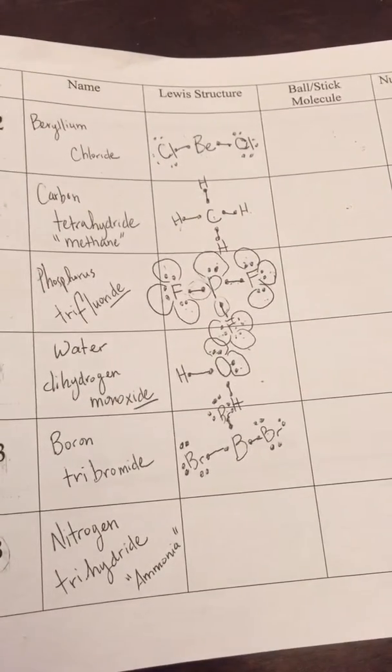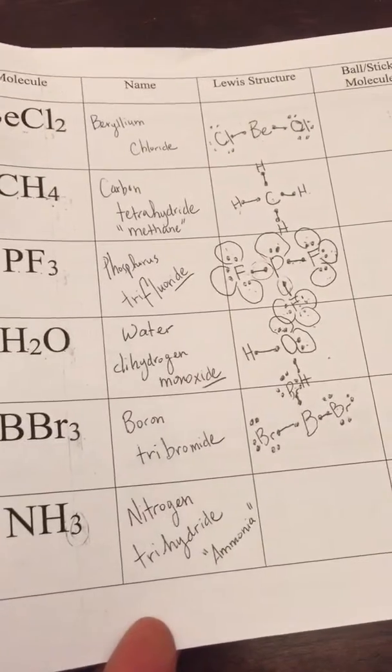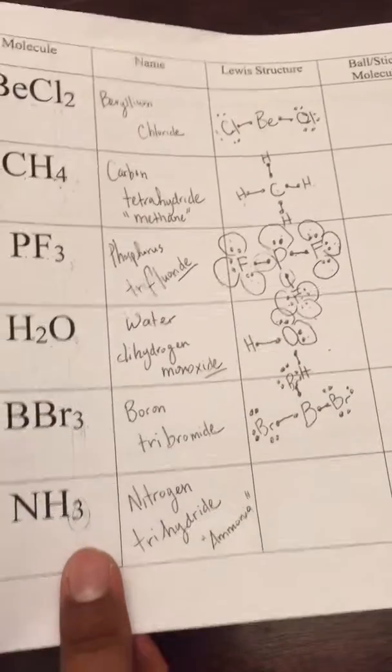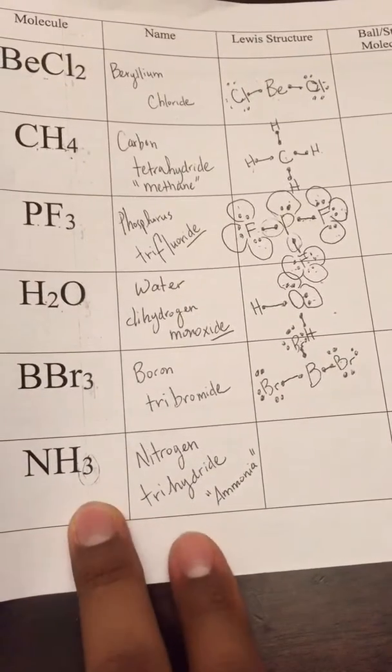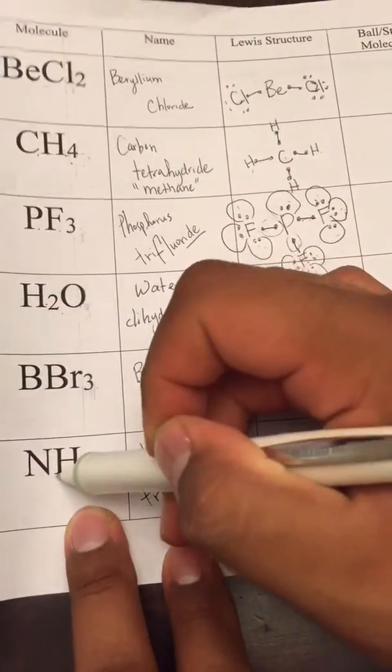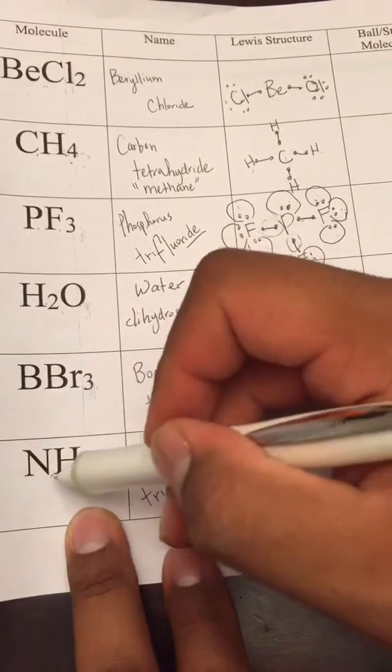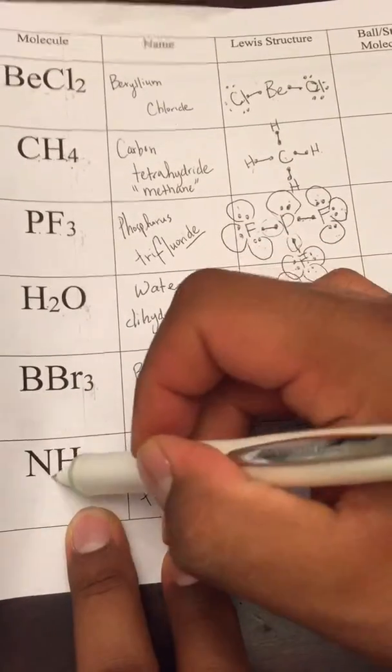The next thing we're gonna do is draw a Lewis structure. We have to determine which one is the central atom. If you notice what we've been looking at, we're looking at the one that has the least number of atoms. This one has one, this one has three, so we're gonna use the N as our central atom.